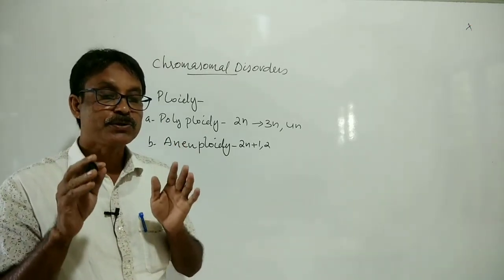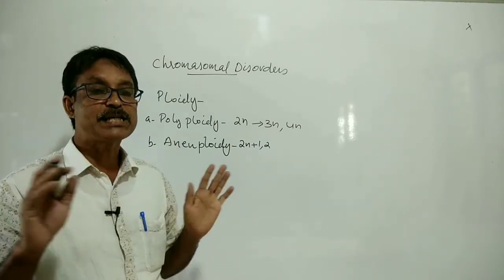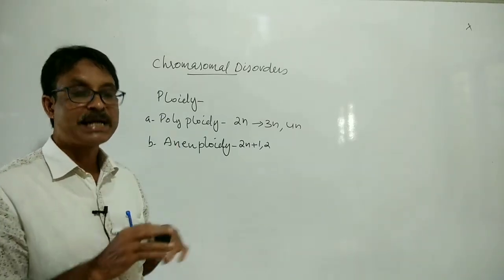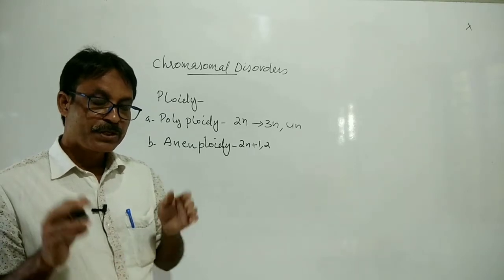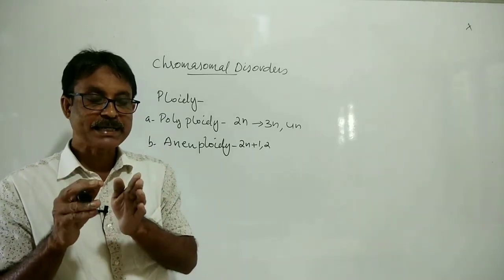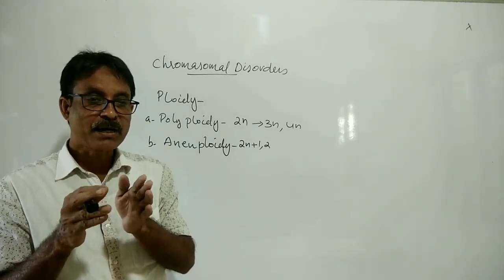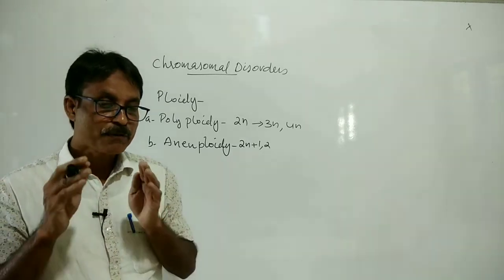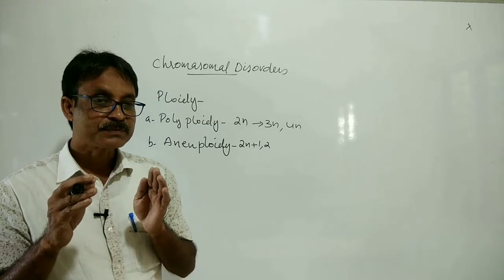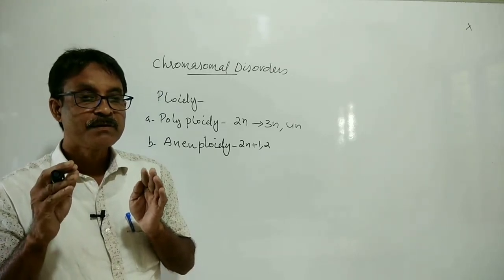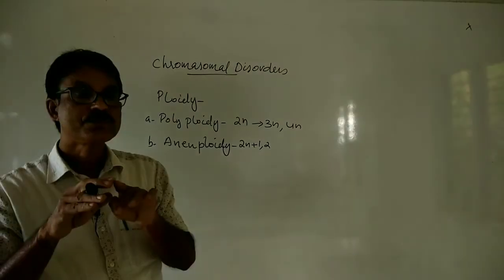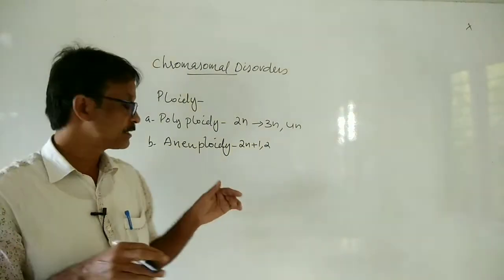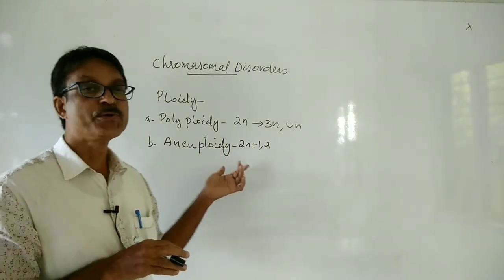Aneuploidy is due to a failure in the segregation of chromatids during cell division. Due to this failure in segregation, the chromatids are not moving into two parts — some of the chromosomes will fail to separate. This results in aneuploidy.